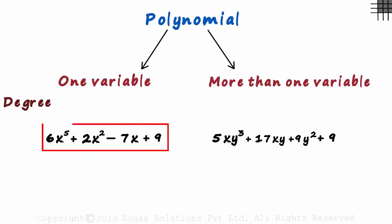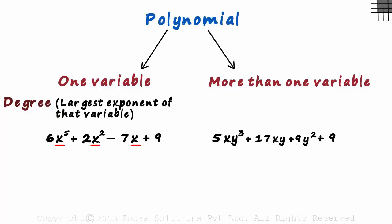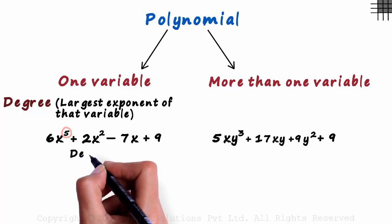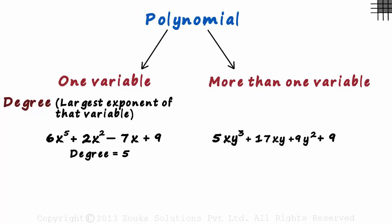In the first category where we have just one variable, the degree is the largest exponent of that variable. Here 5 is the largest exponent which tells us that the degree is 5. The degree of this polynomial is 5.